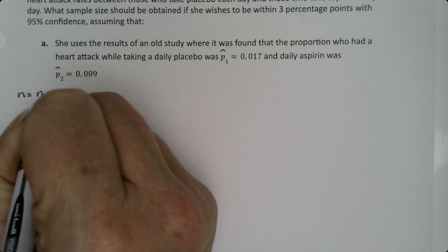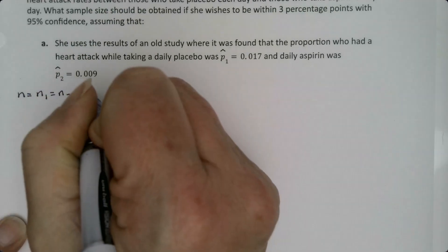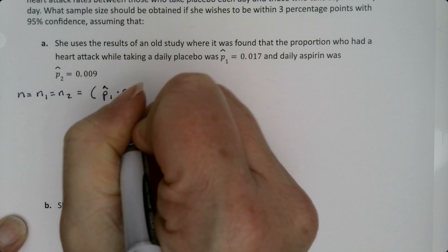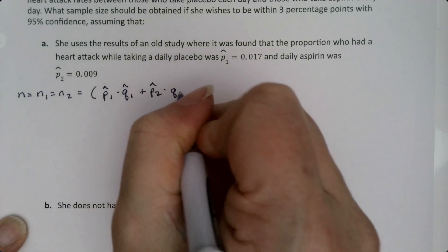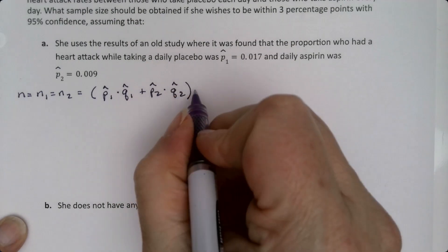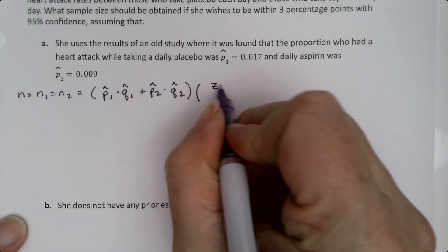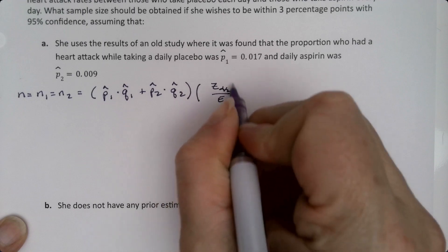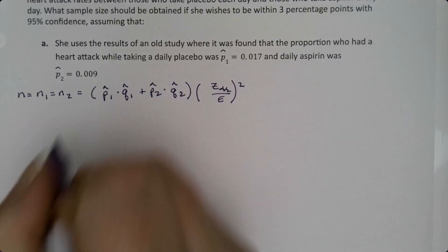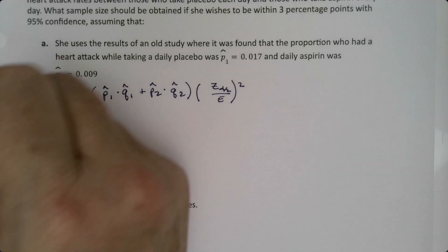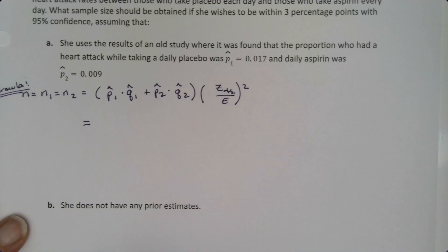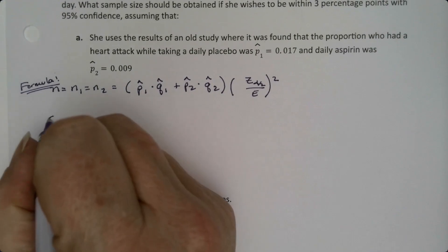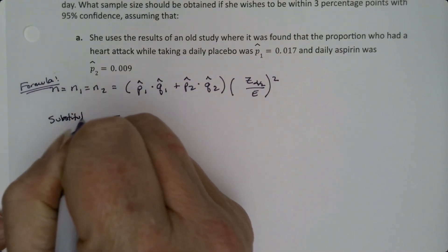So I'm going to write the formula. So N, which is N1, which is N2, is P1 hat times Q1 hat plus P2 hat times Q2 hat times Z alpha over 2 over the error squared. Alright, now the hard part, right? So there's the formula right there. Done. So now I'm going to do the substitution and that's where all the work is. Lots and lots of work.